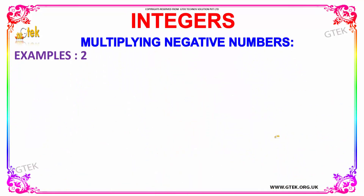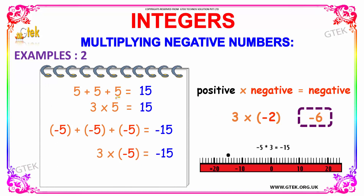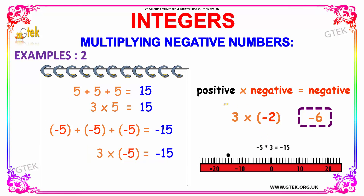Moving on, in the next example we are adding five: five plus five plus five is equal to fifteen. If your five is replaced with minus five, a negative term, then your answer will be exactly the opposite — a negative value of the result. Three times five is equal to fifteen, so replacing five with negative five gives three times minus five equal to minus fifteen. This is based on the principle that positive times negative is equal to negative. Three times minus two will give you minus six.